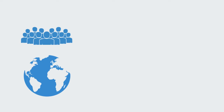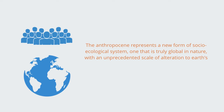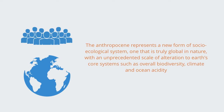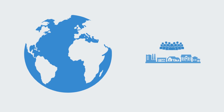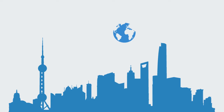The Anthropocene represents a new form of socio-ecological system, one that is truly global in nature, with an unprecedented scale of alteration to Earth's core systems such as overall biodiversity, climate, and ocean acidity. Within the course of just a few decades, we have transitioned from being a small world on a big planet, to being a big world on a small planet — an extraordinary transformation.